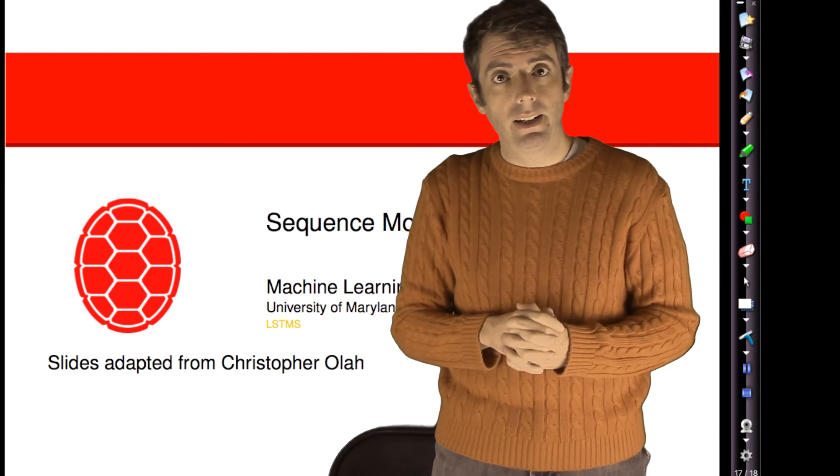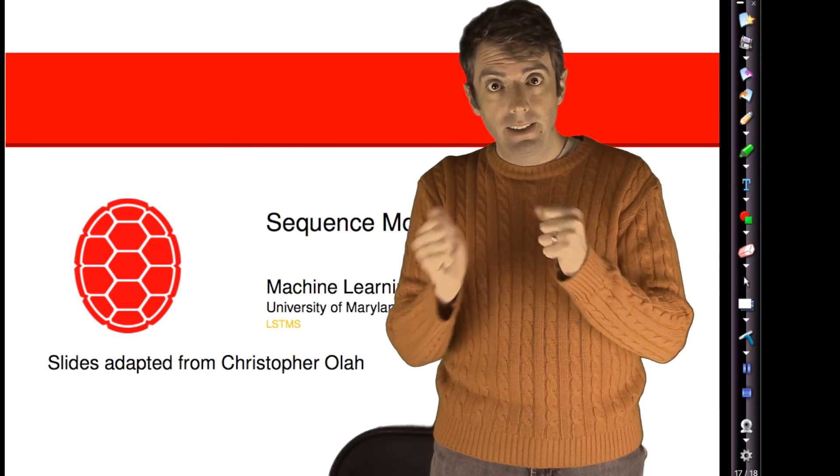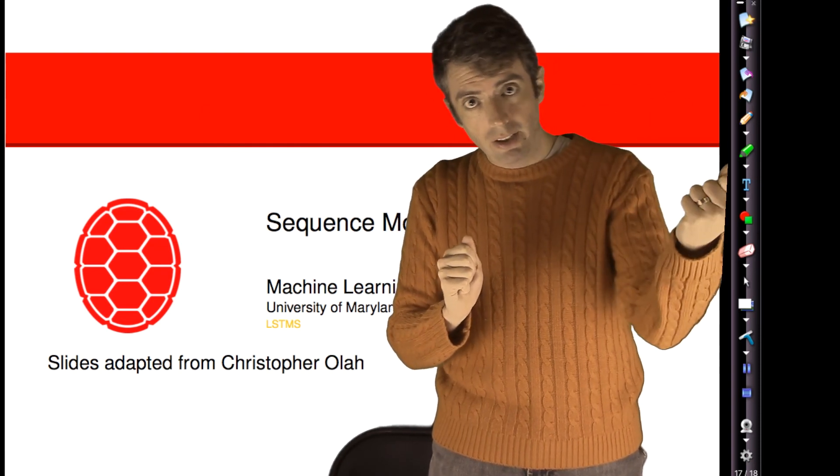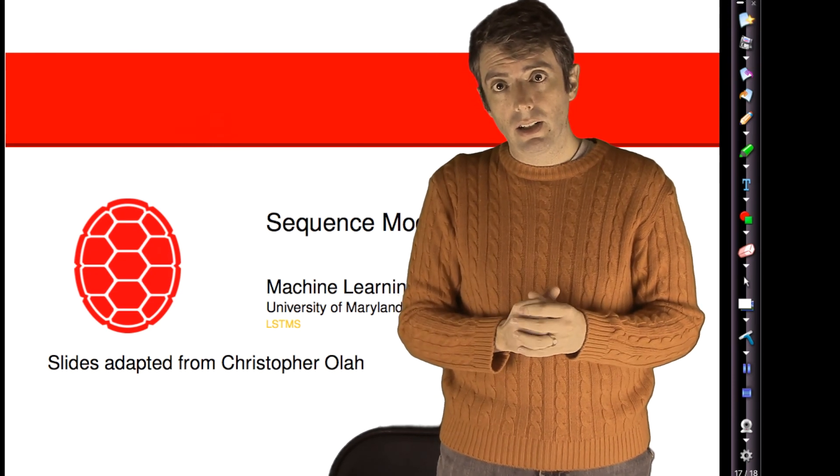It's very much like an RNN, but with more complicated innards, where you effectively decide how much you're going to carry over from the previous time step and how much you're going to use in the current time step.